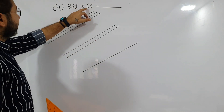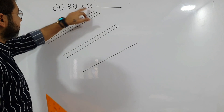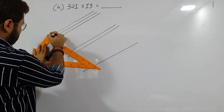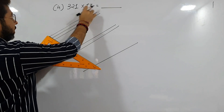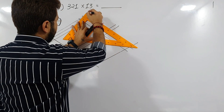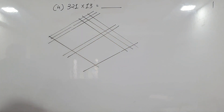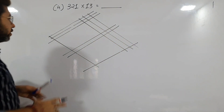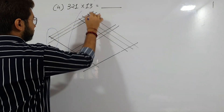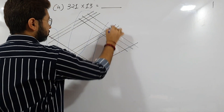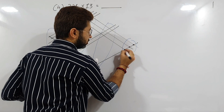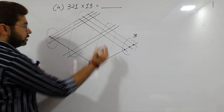Now for 13: the first digit is 1, so draw one line, and the next digit is 3, so draw three lines: one, two, and three. This time we divide into four equal zones. Zone number one, zone number two, zone number three, and zone number four. Apply the same method: one, two, three — zone one gives 3.